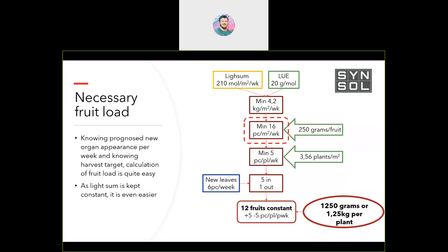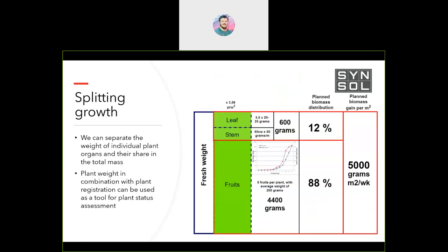Knowing from history the plant development speed based on temperature, we know how many new leaves we'll make per week and can adjust our pruning scheme accordingly. We cannot pick more than a certain number of fruits per week — even with 7 leaves per week we'll be light-limited. Per week we are adding 5 fruits and taking 5 fruits off the plant, and we can calculate what biomass and biomass distribution we will generate.